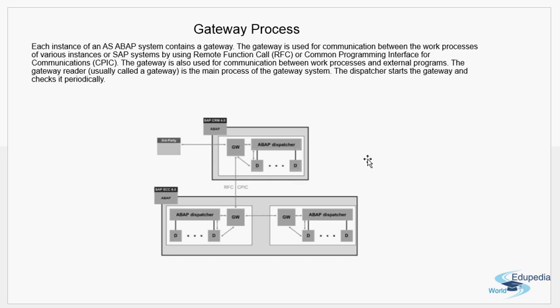Every instance will have a dispatcher accompanied by a gateway. When communication has to be made to a third party or a different system, the dialogue work process communicates through an RFC. The gateway then inter-communicates with the gateway of the other SAP system or third party and sends the request to the dialogue work process in that system. The message server helps only in communication between different instances of a single SAP system, whereas the gateway enables communication between different SAP systems as well.